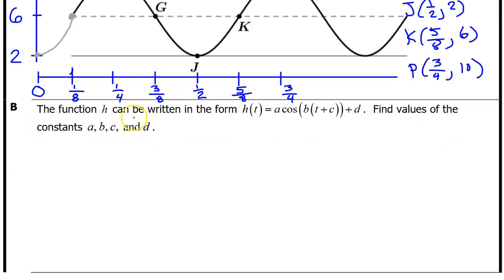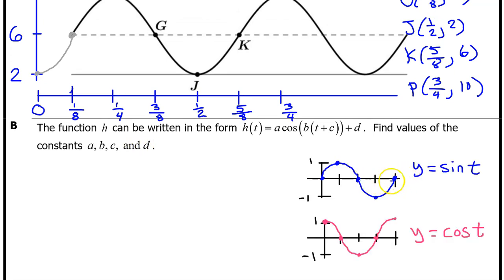Part B. The function h can be written in the form h(t) = A·cos(B·t + C) + D. Find the values of the constants A, B, C, and D. Memorize that the parent function y = sin(t) starts at the midline, rises, falls, and returns to the midline. The parent function y = cos(t) starts at its highest value, falls, and then rises back to its highest value. We notice that h(t) is a transformation of the cosine function.